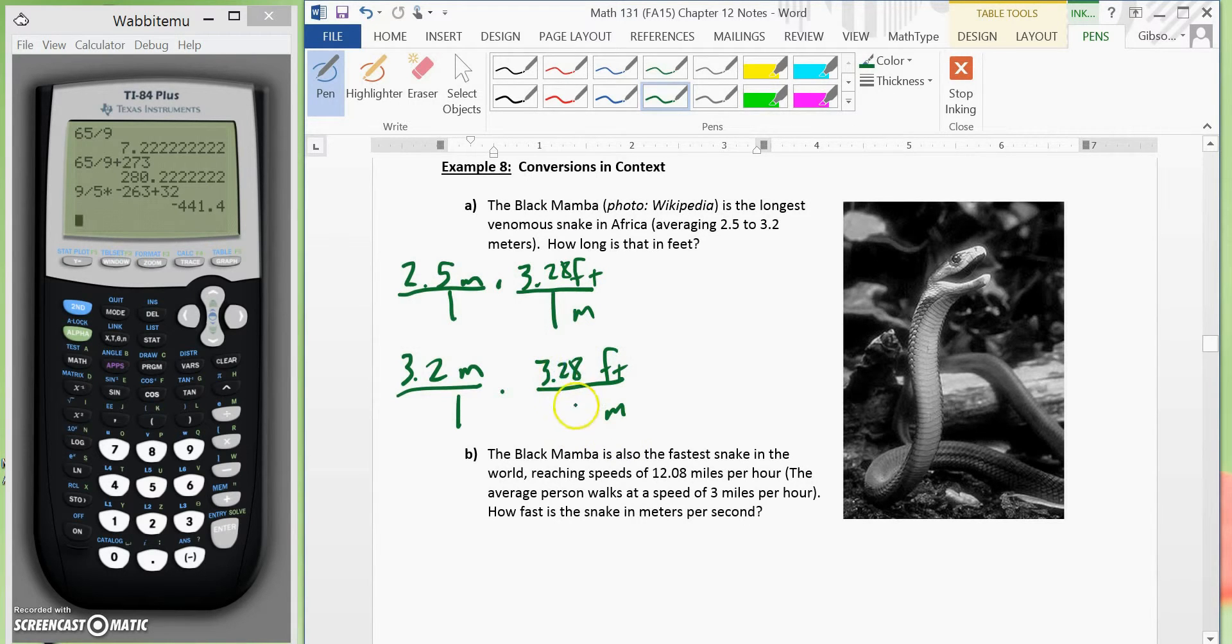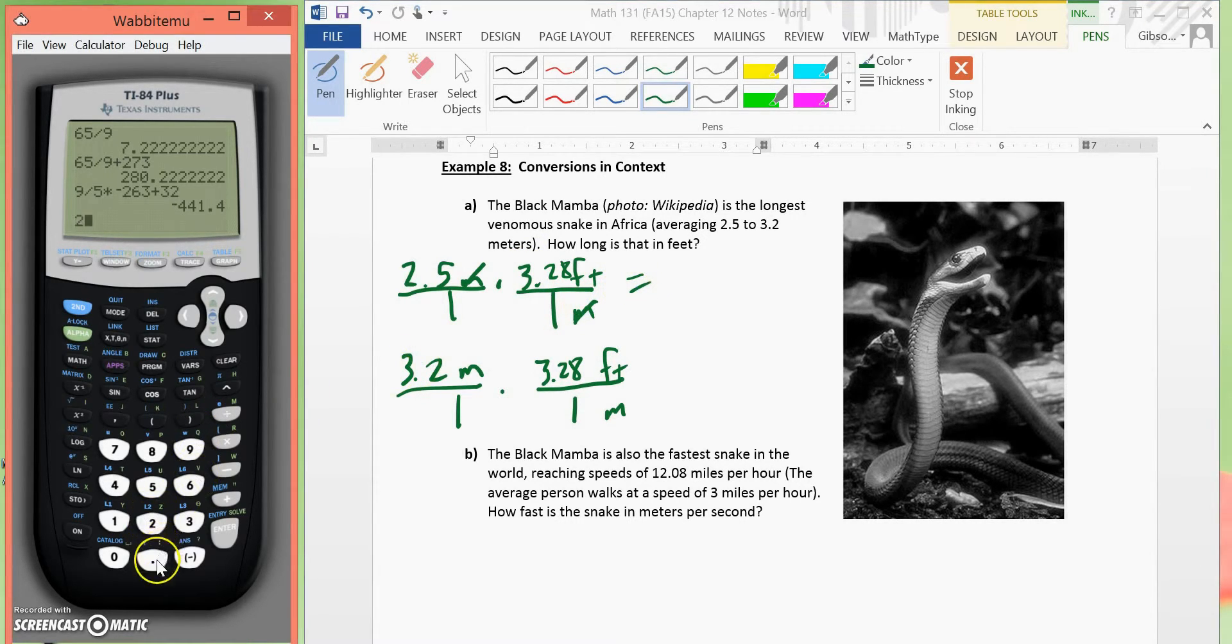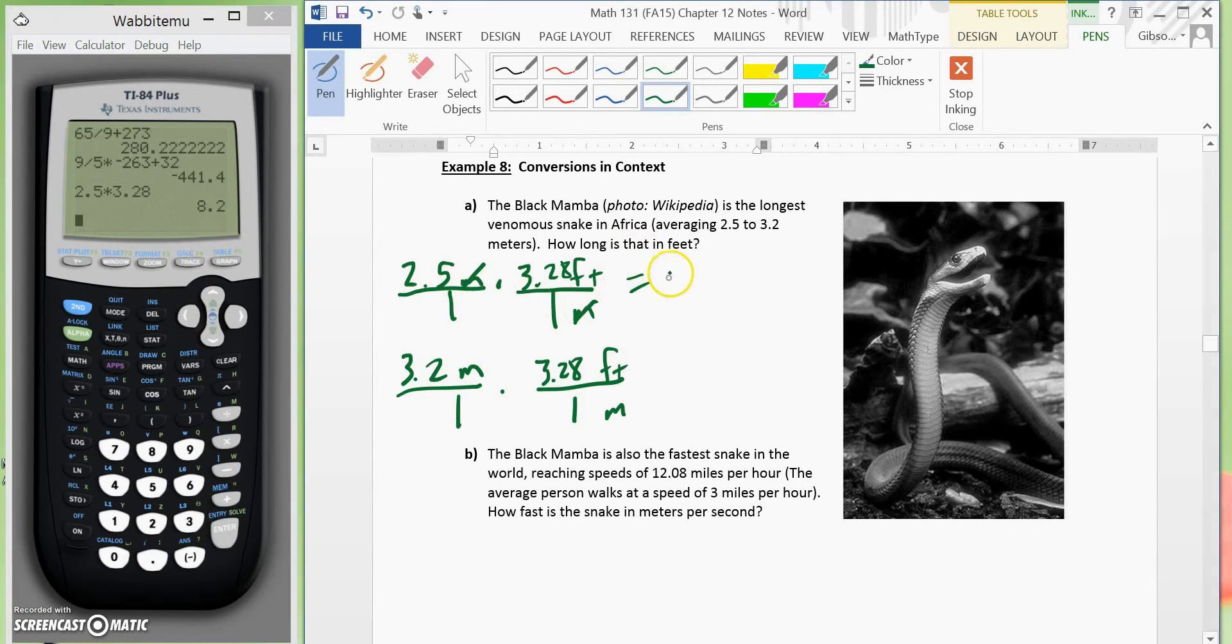3.28 feet is 1 meter. So now meters will simplify our meters, and then we will multiply. We would add 2.5 times 3.28. That will give us 8.2. So that's exactly 8.2 feet.